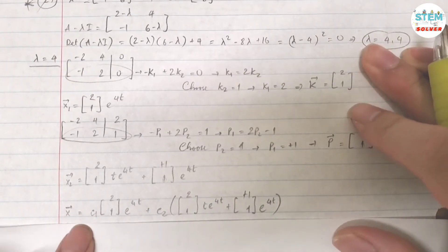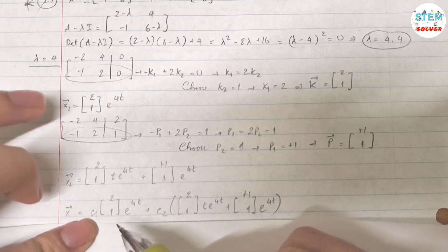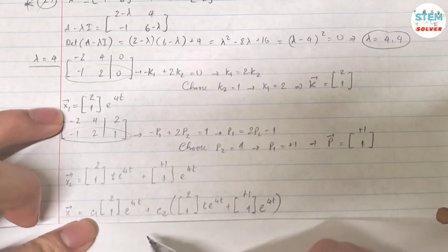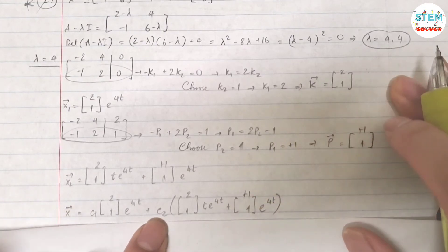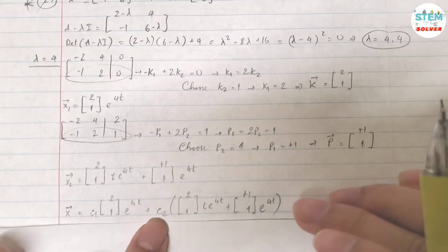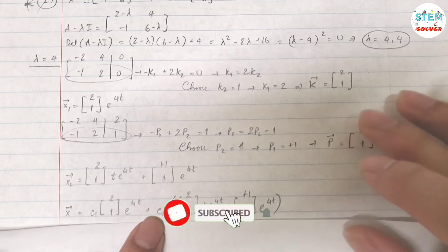Now it's time to combine them together. So my general solution is vector x equals c1 times vector x1 plus c2 times vector x2. We're not done yet. Normally, we will be done here, but because we are given conditions, you have to figure out what c1 and c2 are.